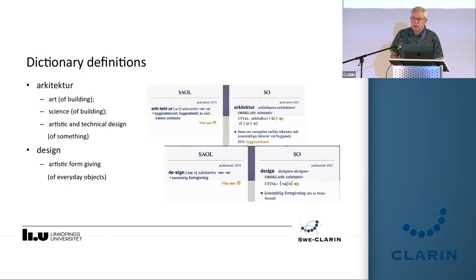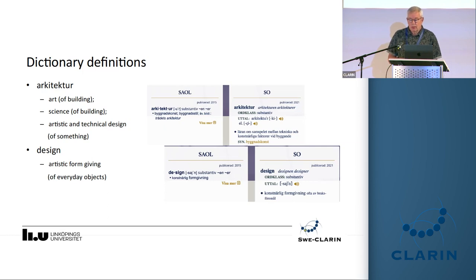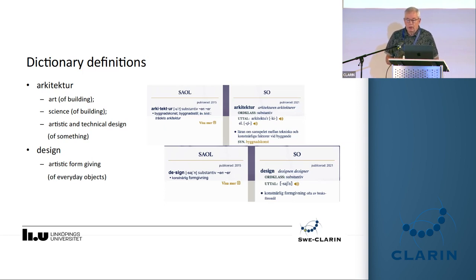The first source you go to are the dictionaries, and there you can see that architecture is defined sometimes as an art, sometimes as a science — and interestingly, sometimes in terms of design — whereas design is not defined in the other way. They have differences: architecture relates primarily to buildings, design to everyday objects, but they are both somehow related to art.